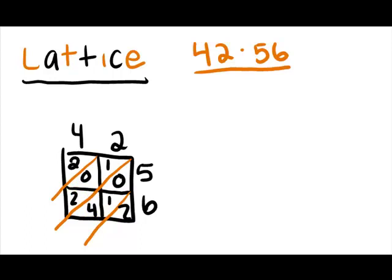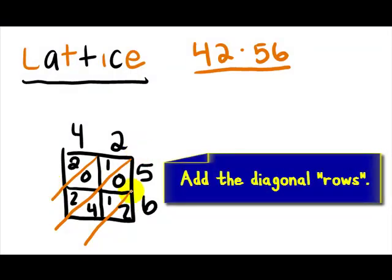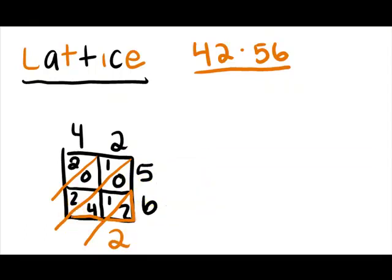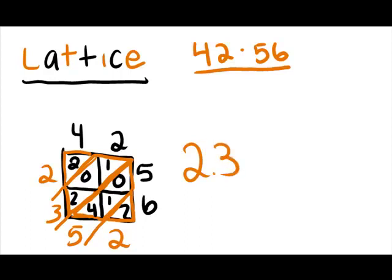Then what we're going to do is we're going to add up every row. So we're going to do two plus nothing, because there's nothing there, is two. Four plus one is five. Two plus zero plus one is three. And then two plus zero is two. So your answer is two thousand three hundred fifty-two. Thank you.